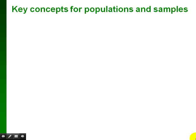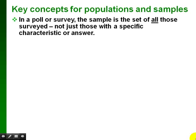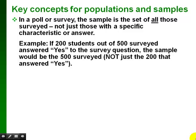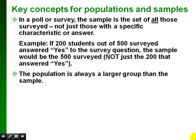Sometimes it's hard to tell the difference between populations and samples, so here are some key concepts. If we're doing a poll or survey, the sample is the set of all those that were surveyed, not just those with a specific characteristic or answer. For example, if 200 students out of 500 surveyed answered yes, the sample would be all 500 that were surveyed, not just the 200 that answered yes. The population is always a larger group — the whole set of elements, people, scores, or whatever we're interested in.